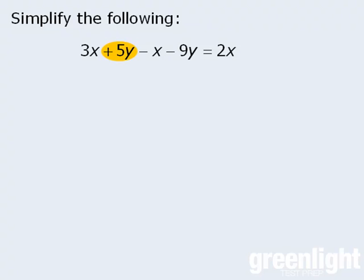Now notice that we have +5y here, and from it we are subtracting 9y, which gives us -4y. So we have now simplified the expression on the left-hand side to be 2x - 4y.